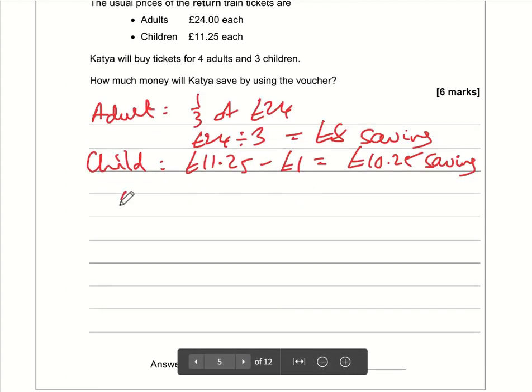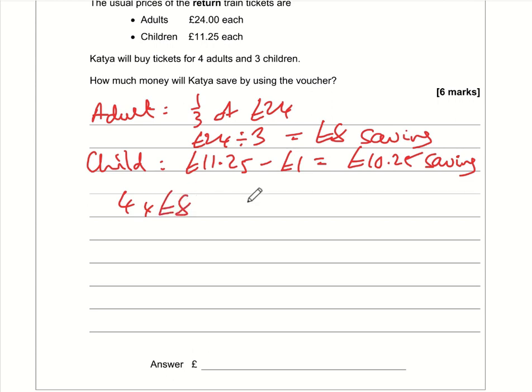Katya is buying four adult tickets, so that's 4 times £8: 8, 16, 24, 32. And three child tickets at £10.25 each. I'll break that down: 3 times £10 is £30, and 3 times 25p is 75p.